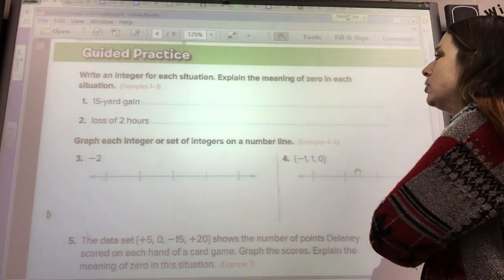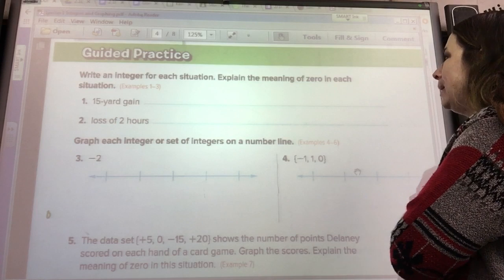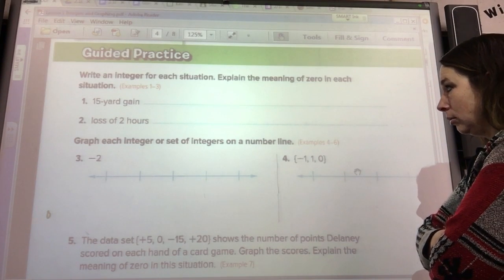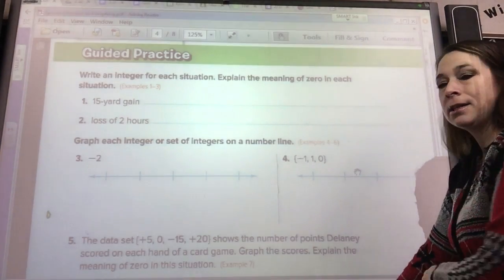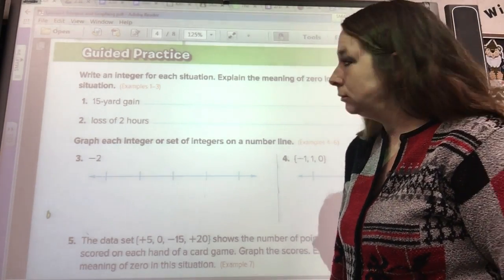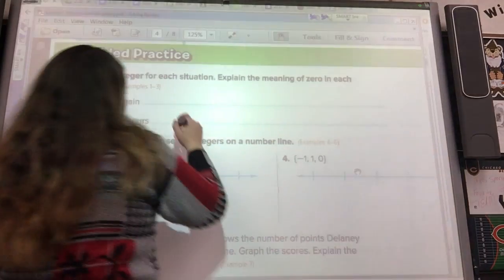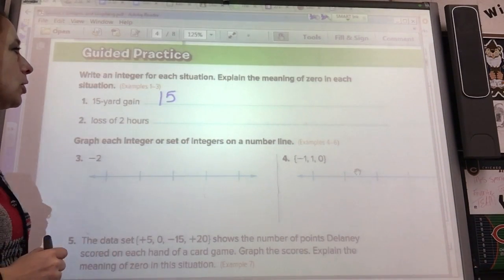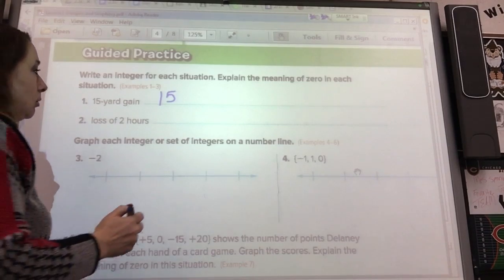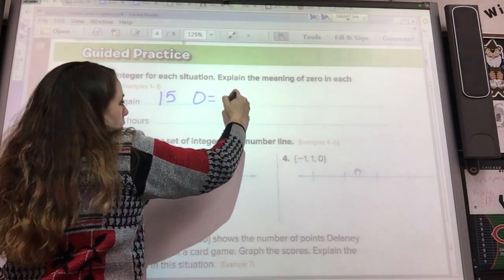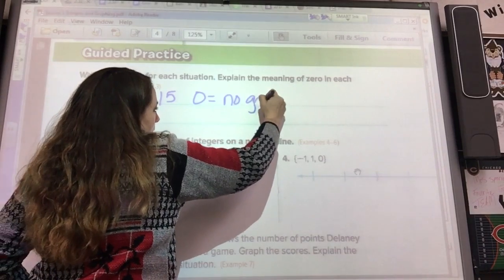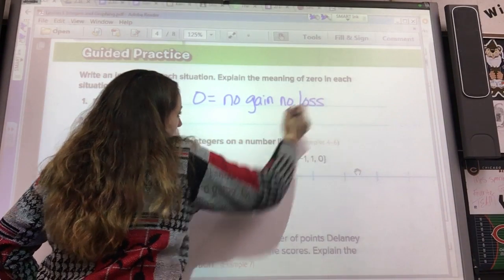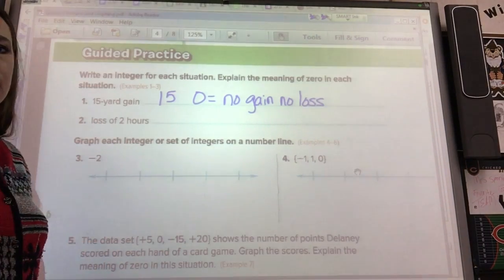Okay, write an integer for each situation. Explain the meaning of zero. We have a fifteen yard gain. Fifteen yard gain would be a positive. So we got fifteen, that's writing our integer for the situation. And what would zero mean? Zero means no gain, no loss. Just means they stayed right where they were.